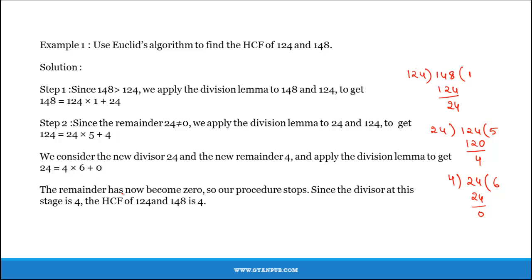Here the remainder has become 0, so our procedure stops. Since the divisor at this stage is 4, the HCF of 124 and 148 is 4.